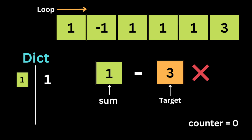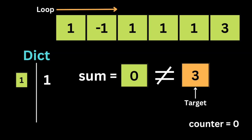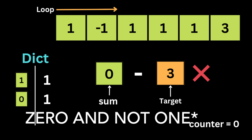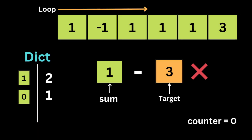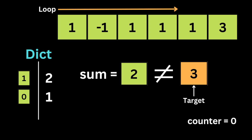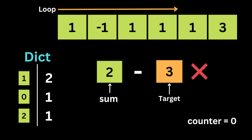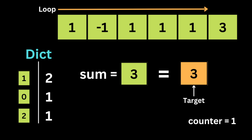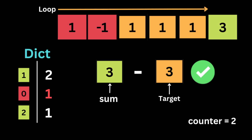We store the first sum in the dictionary with a value of 1 (representing one appearance). Moving to the next number, sum becomes 0; we check both conditions and store it in the dictionary. Sum becomes 2; the difference is minus 1, which is not in the dictionary, so we add it. At the next number, 1, sum becomes 3, which equals the target k — we found the first subarray and increment the counter. Then we check the difference: 3 minus 3 equals 0.